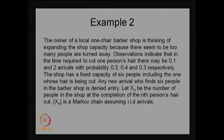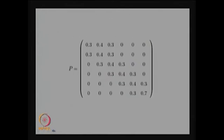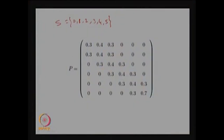In this example our interest is to find out the one-step transition probability matrix. The possible states S are going to be 0, 1, 2, 3, 4, or 5, because the capacity of the system is 6. Whenever the nth person leaves, the maximum number of people remaining in the system will be 5, and there is also the possibility that when he leaves no one is in the system. The one-step transition probability matrix is a square matrix because there are a countably finite number of elements.